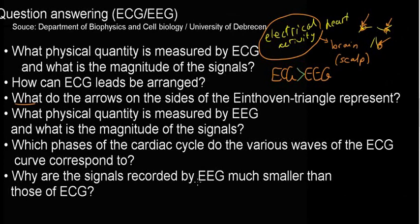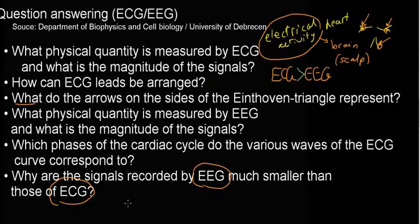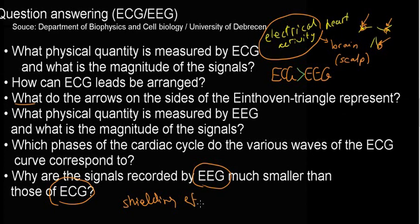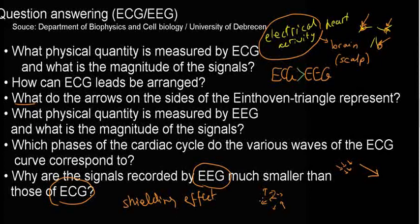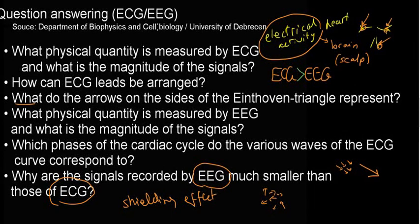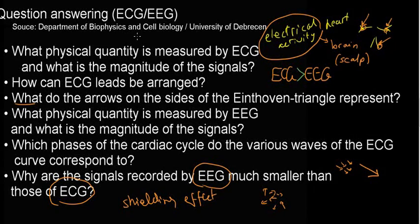Question six: why are EEG signals much smaller than ECG signals? First, we have the shielding effect of the skull. Second, neurons fire in different directions and at different amplitudes, so instead of producing a nice addable vector like the heart does, they can cancel out randomly. Those are the two reasons. That covers electroencephalography and electrocardiography for the basics of biophysics. See you in the next video.